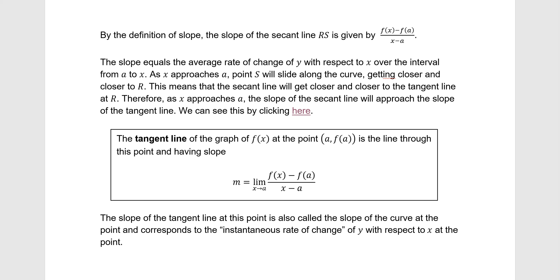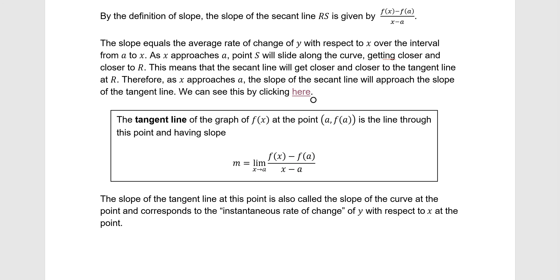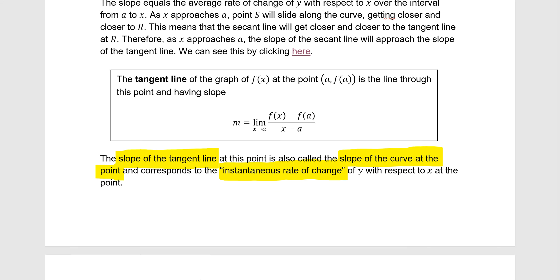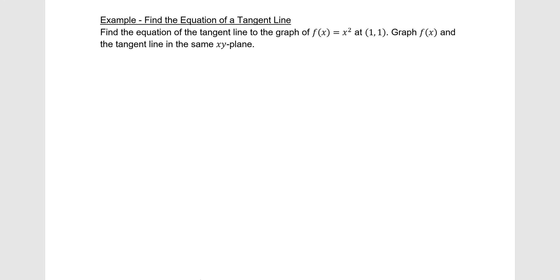Any time we have this kind of motion, we work with limits. The tangent line to the graph of f(x) at point (a, f(a)) has slope equal to the limit as x approaches a of (f(x) − f(a)) / (x − a). This slope is also called the slope of the curve at that point and the instantaneous rate of change at that point — they all represent the same thing.